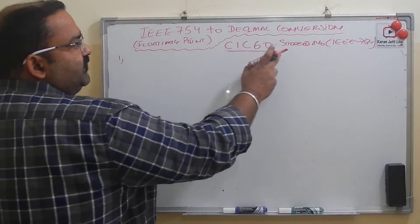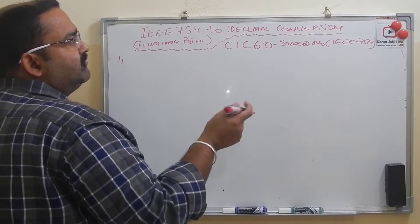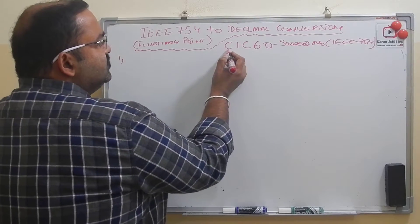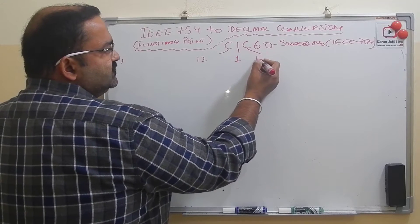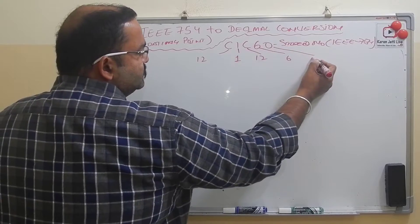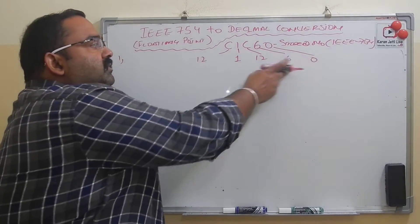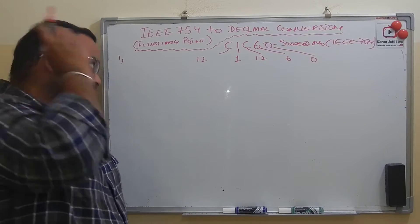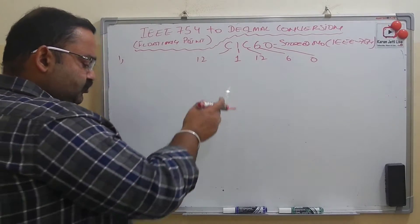Step one: convert this hexadecimal number to binary. C is 12, one is 1, C is 12, six is 6, and zero is 0. To convert to binary, first I will get the value each hex digit stands for. C is 12, and what is 12 in binary?